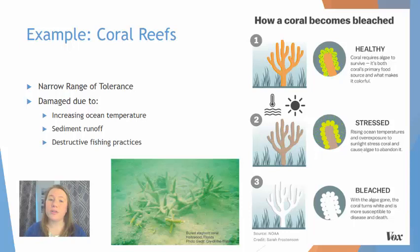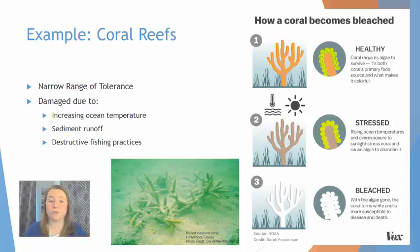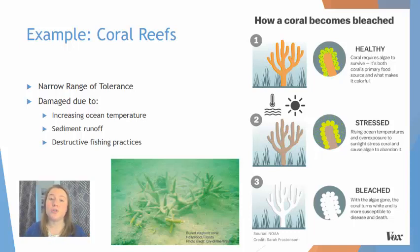An example here would be coral reefs. Coral reefs have a very narrow range of tolerance and they become damaged anytime conditions get outside of that optimum range. Some of the things that are damaging coral reefs include increasing ocean temperature, which leads to coral bleaching, sediment runoff which leads to the smothering of the corals, and destructive fishing practices which break up and completely disturb that bottom habitat where the coral reef occurs.